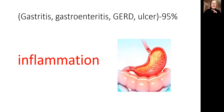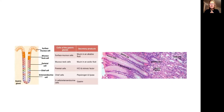Modern medicine increasingly recognizes how much inflammation contributes — in the cardiovascular system, in the intestines, and even cancer is inflammation. When inflammation occurs in the stomach, as shown in the previous video, the gastric pit becomes blocked. So the gastric juices — hydrochloric acid, intrinsic factor, and pepsin — get produced but cannot get out to digest food. The hydrochloric acid then starts to break down the surrounding tissues, creating even more inflammation in the stomach.